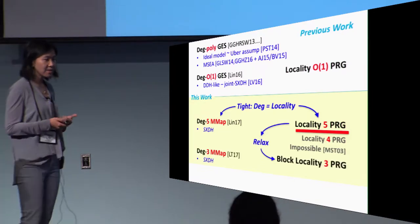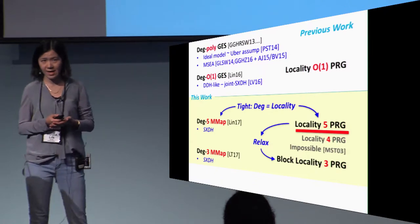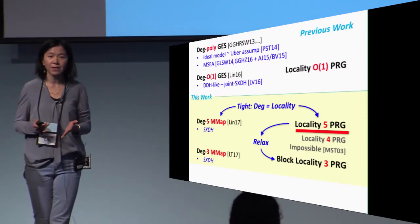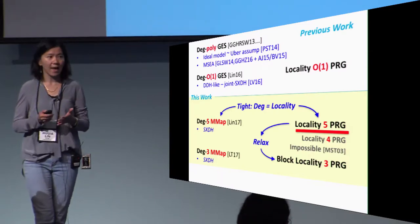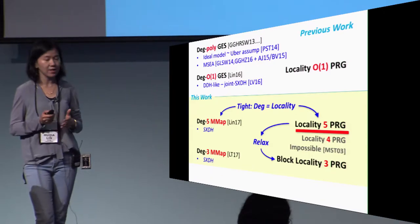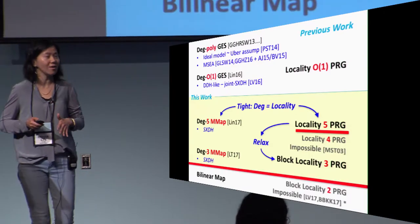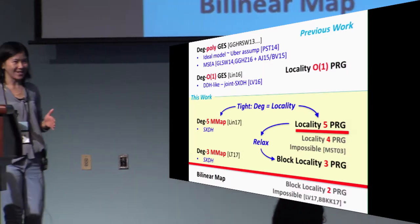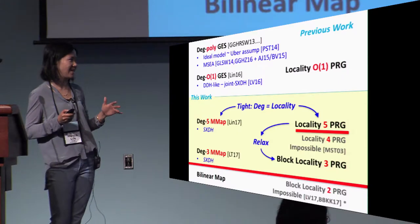However, even with this tightness we hit a wall because locality 4 PRG simply do not exist. Therefore, in the second paper we propose a new and relaxed notion of locality called blockwise locality. We show that it still suffices for constructing IO, and hence give us IO from trilinear maps and blockwise locality 3 PRGs. At this point we hit another wall, which is that block locality 2 PRG unfortunately do not exist. This bars us from constructing IO from just bilinear maps.